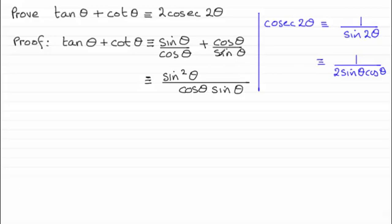For this fraction here, I multiply the denominator sine theta by cosine theta. So, I need to multiply the top of the fraction by cosine theta. So, cosine theta times another cosine theta is cos squared theta.